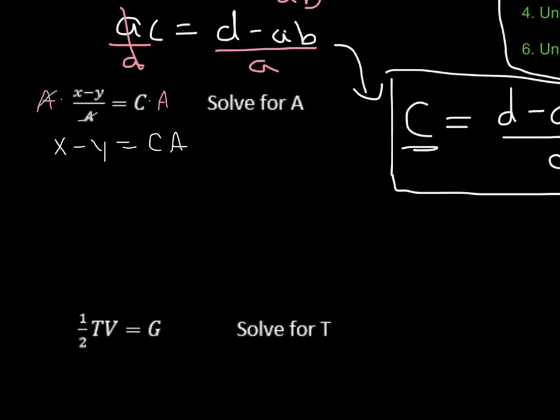Now, again, I'm trying to solve for a. You see I've got this a over here. What's next to it is the c, so we're going to divide both sides by c now. These cancel out, and on the left-hand side, I have x minus y divided by c equals, what's left on that right-hand side is just a.